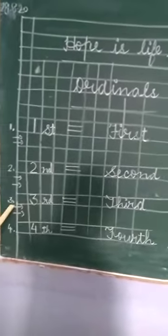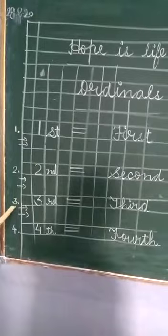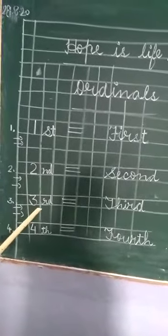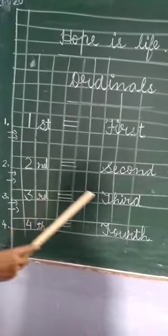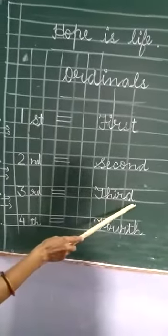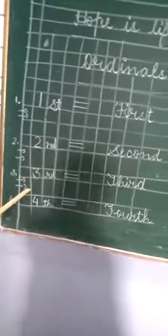Like we write 3. Here this is cardinal. Its ordinal is third. And the spelling of third is T-H-I-R-D, third. Again you have to leave two lines.